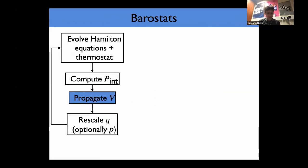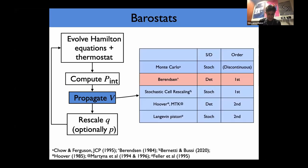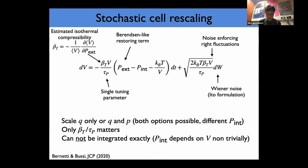In practice, to implement barostats: evolve Hamilton equations, apply thermostat, compute internal pressure, propagate the volume, then scale positions and optionally scale velocities. Popular options include Monte Carlo, the Berendsen scheme (first-order, efficient but not correct fluctuations), and several others. Among those that are first-order and give correct fluctuations is stochastic cell rescaling (SCR), which I will now discuss in detail.